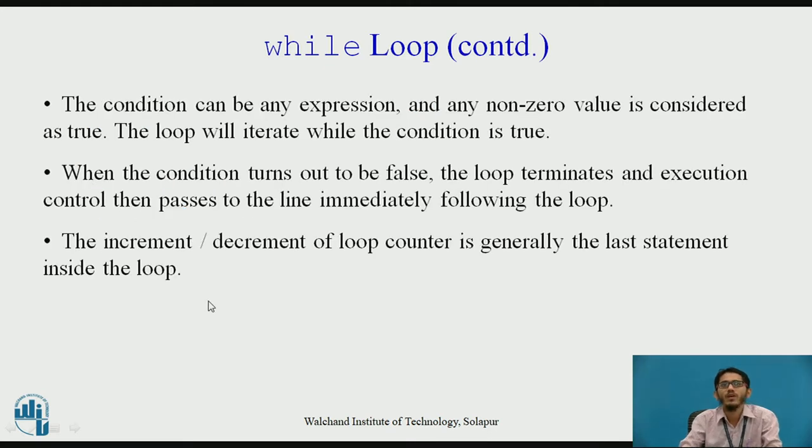In the while loop, the condition can be any expression and any non-zero value is considered as true. A zero value indicates false. The loop will iterate while the condition is true, and when the condition turns out to be false, the loop terminates and the execution control gets shifted to the line immediately following the while loop. The most important thing inside a while loop is the increment or decrement of the loop counter. The increment or decrement of the loop counter, the iteration part, is generally taken as the last statement inside the loop.